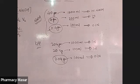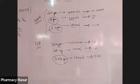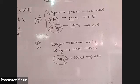Similarly, we can prepare 0.1 normal KHP solution. For that purpose, we have to add 2.04 grams of KHP in 100 ml of water.